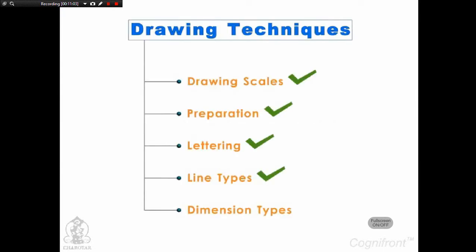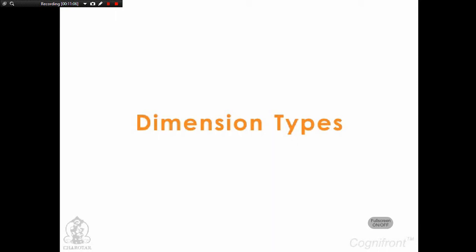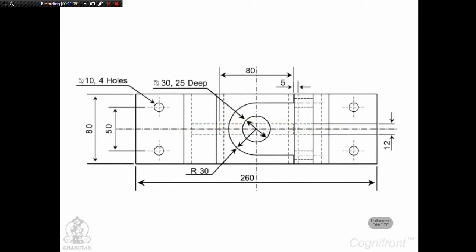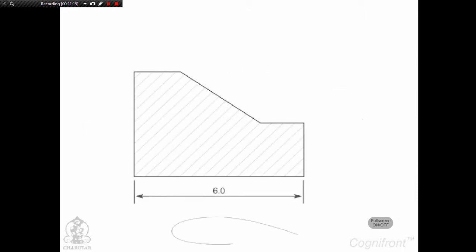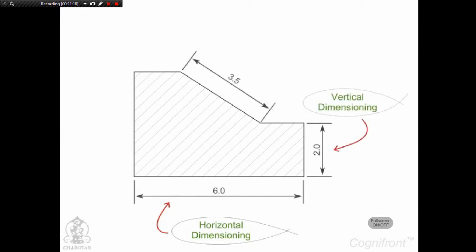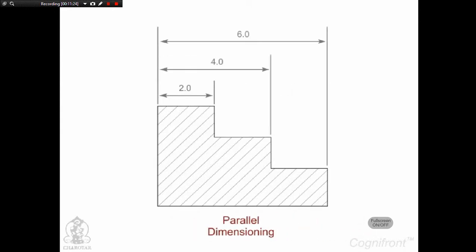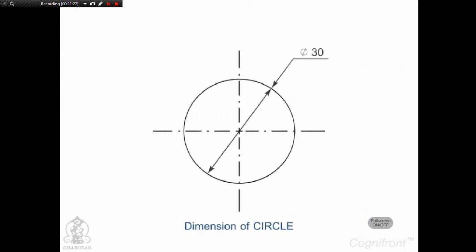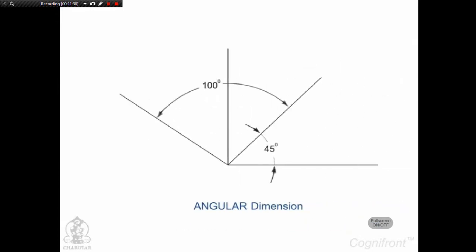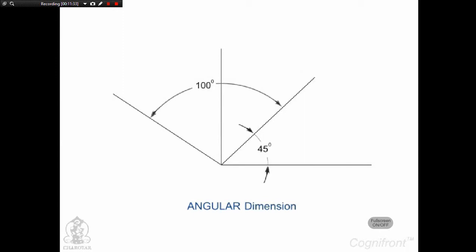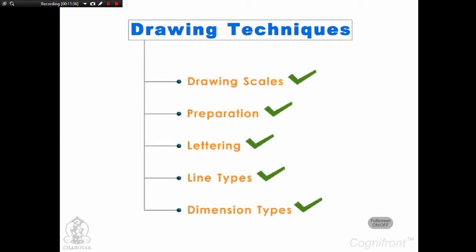Now it's time to give exact dimensions to our drawings. Dimensioning plays a very important role while drawing. There are many types of dimensioning such as horizontal dimensioning, vertical dimensioning, aligned dimensioning, chain or continuous dimensioning, parallel dimensioning, diameter dimensioning for circles, radius dimensioning for arcs, and angular dimensioning for angles. With this, we have covered all necessary fundamentals of engineering drawing and graphics. Happy drawing!